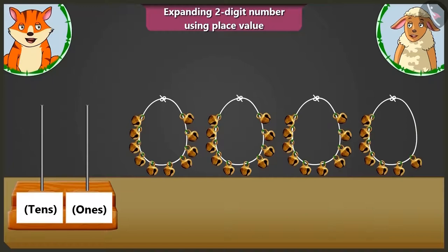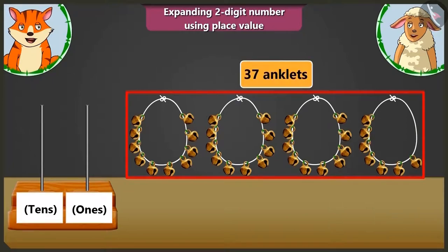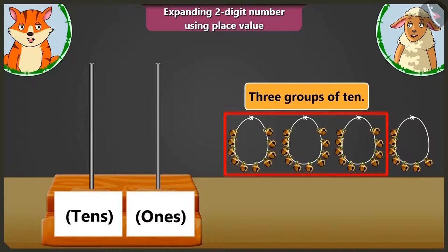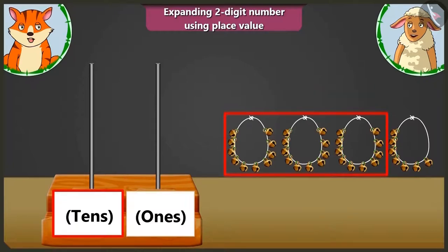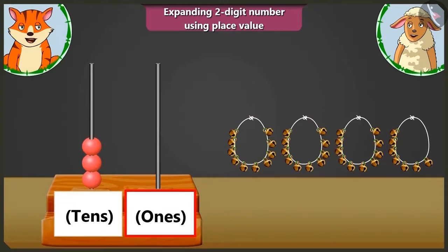It means the total number of beads are thirty-seven. Here there are three groups of tens. That's why I will put three beads in ten's box and seven beads in one's box.